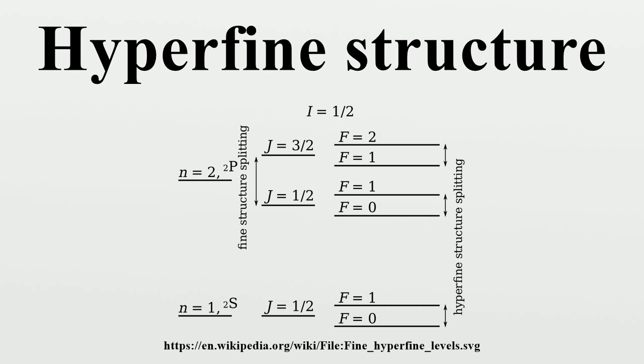Electric quadrupole: Atomic nuclei with spin greater than one-half have an electric quadrupole moment. In the general case this is represented by a rank 2 tensor, with components given by: